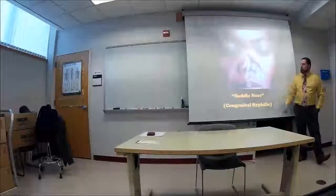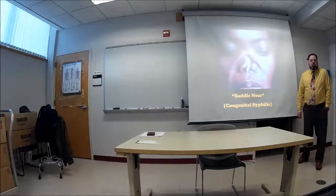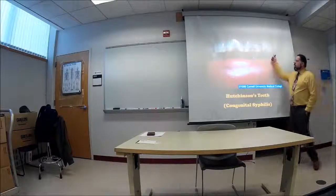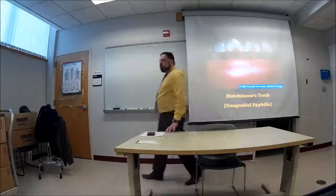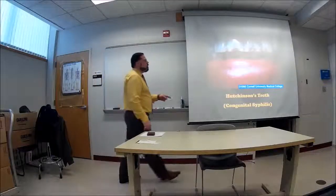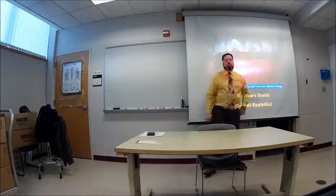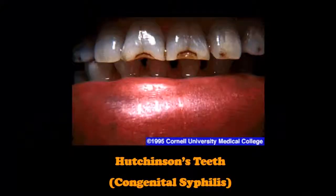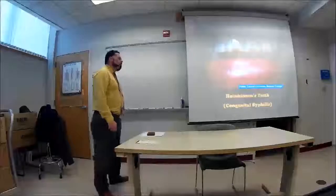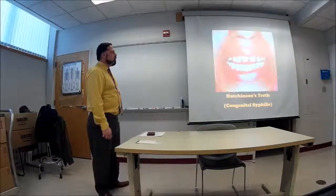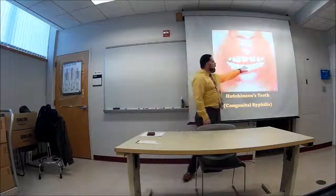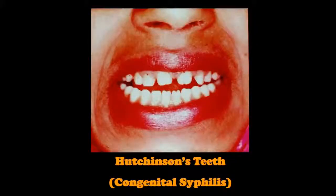You can see the saddle nose that happens with congenital syphilis. We also see a dental sign — not visible at birth, but when the child grows teeth, they develop notches called Hutchinson's teeth. These little notches in the teeth are a classic sign of congenital syphilis.